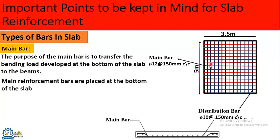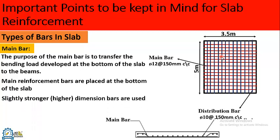Here we have a slab. The bars shown in red are called main bars and these are placed at the bottom of the slab, because these bars are mainly responsible for carrying load and transferring it to the beams. Main bars are slightly stronger or higher in dimensions as compared to distribution bars. Main bars are placed in the shorter direction — in this example, 3.5 meters — along the shorter span of the slab.